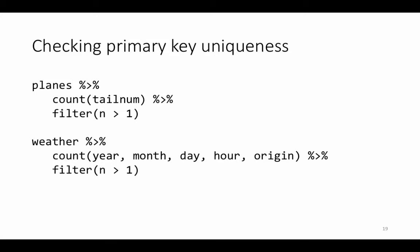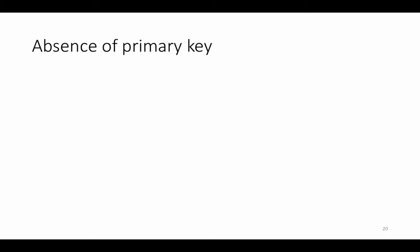Sometimes what we think of as a primary key may not actually be a primary key. For example, we might think that for a given day, say January 5, 2013, combined with a flight number, would uniquely identify a particular flight within our flight table. Let's check that.